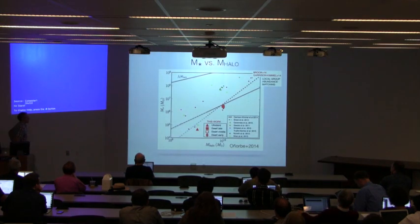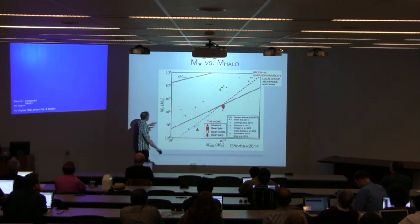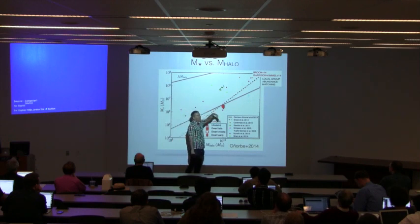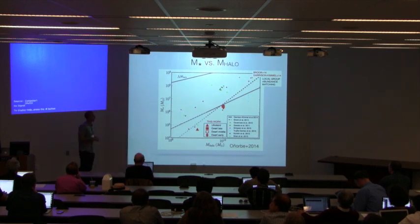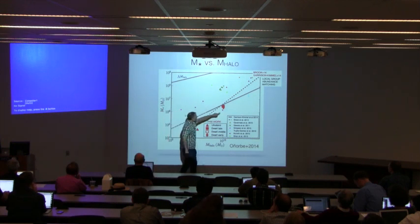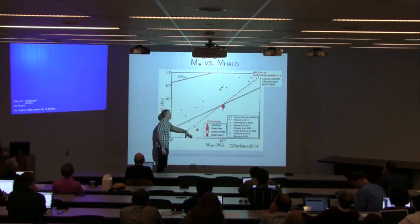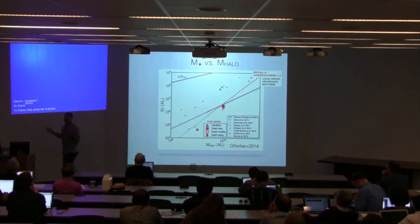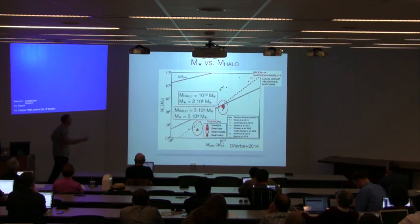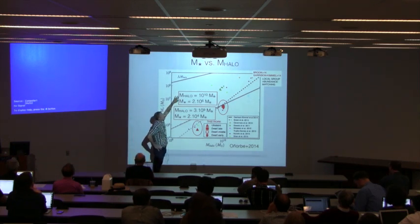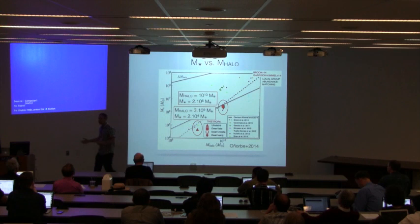Here's where these systems sit on an abundance matching relationship — stellar mass versus halo mass. The lines are abundance matching results from doing local volume abundance matching, from Brook et al. and from Garrison-Kimmel's Elvis simulation. Our three dwarf simulations sit right on the relation: 10^10 dark matter halo, stellar mass of about 2×10^6. And our ultra-faint sits at halo mass 3×10^9 with stellar mass 10^4. We're pretty happy with the stellar mass-halo mass relationship.